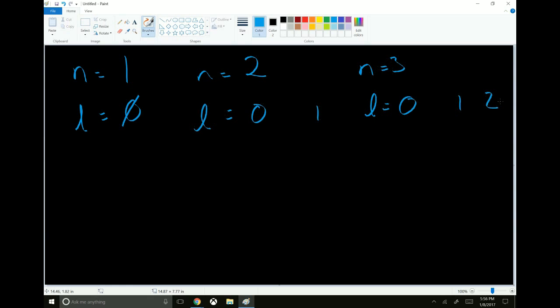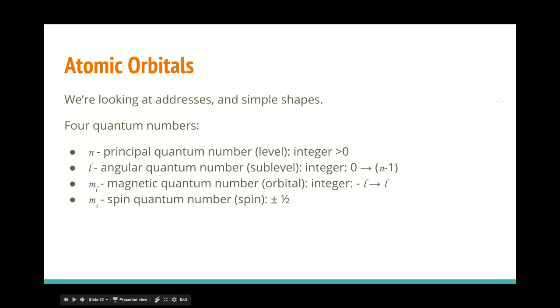Next up, we have the magnetic quantum number. Remember that things are starting to get weird there when trying to think about them in terms of real physical quantities, so don't try. That is an integer from negative l to l.